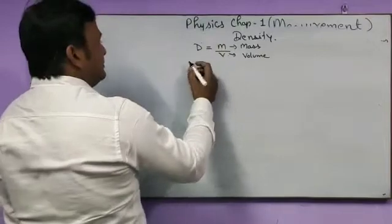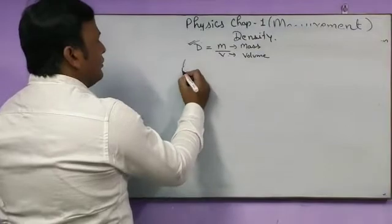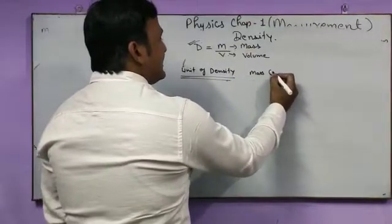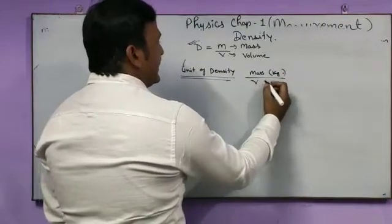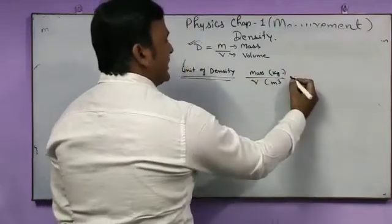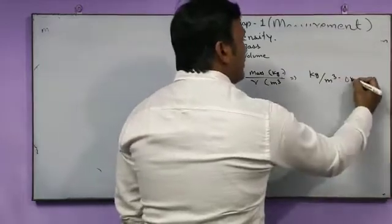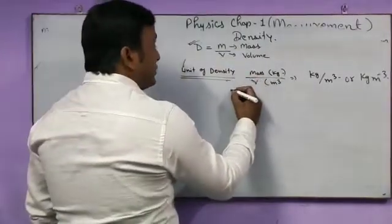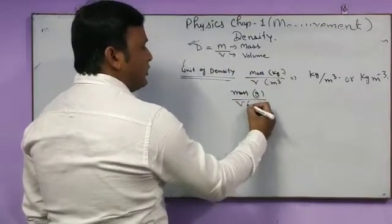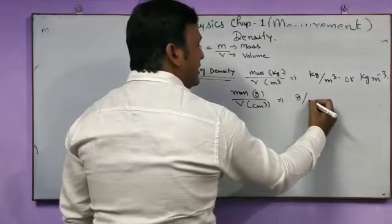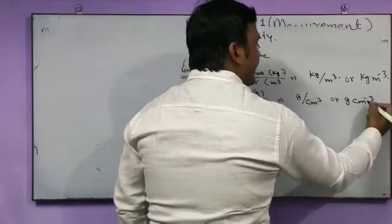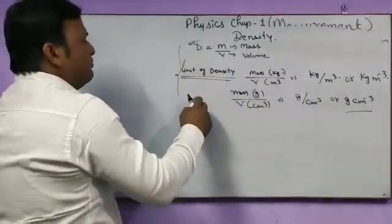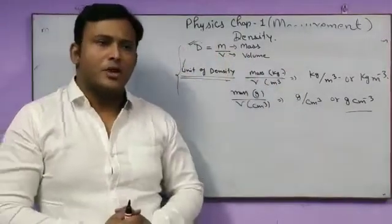Mass is in kilograms and volume is in meter cube. Therefore, you can see the value will be kg per meter cube or kg meter inverse. Or suppose if the mass is in gram and volume is in centimeter cube, therefore the unit of density will be gram per centimeter cube or gram centimeter cube inverse. These are the units of density.